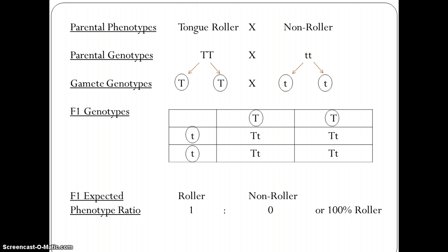Because they would all end up with the same genotype, large T small t. In this case the phenotype ratio is 1 to 0 tongue roller to non roller. But it would be more appropriate to say 100% of the offspring were tongue rollers.